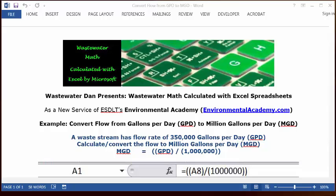Today's problem reads: Wastewater Dan has a flow rate of 350,000 gallons per day GPD. Calculate/convert the flow to million gallons per day MGD.